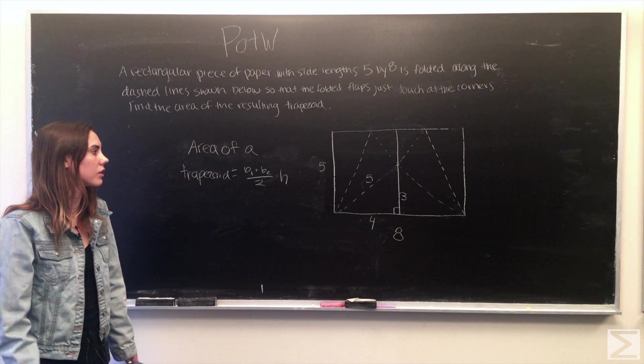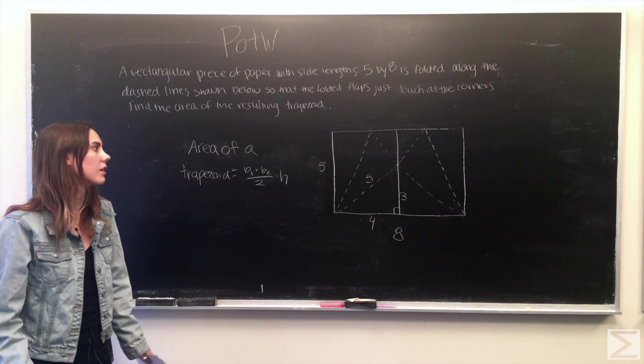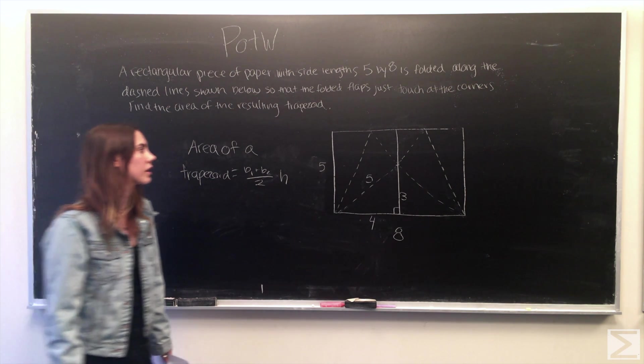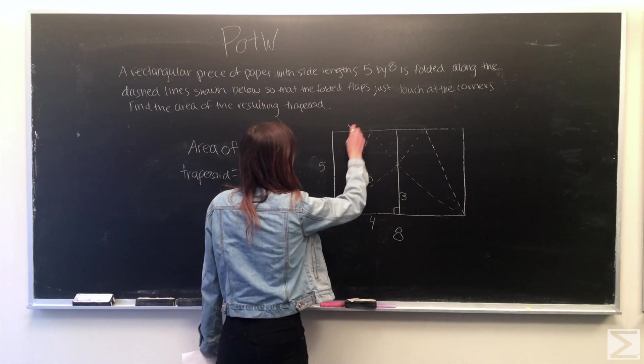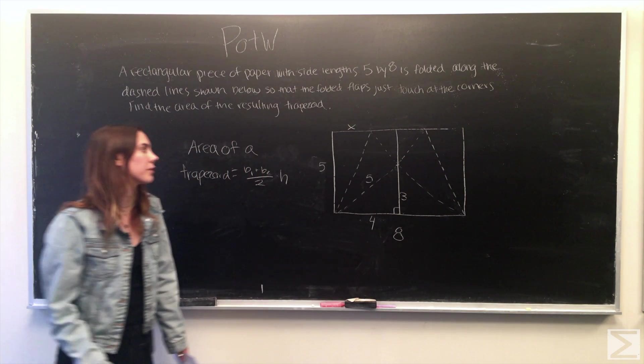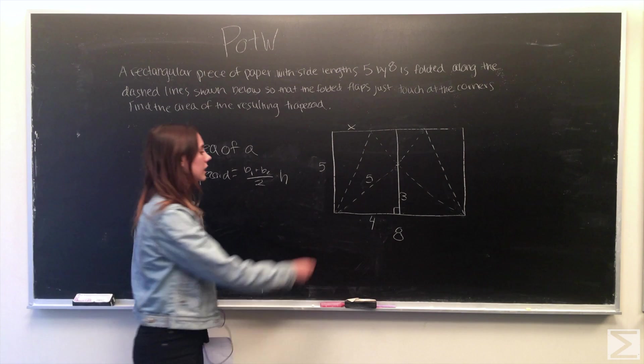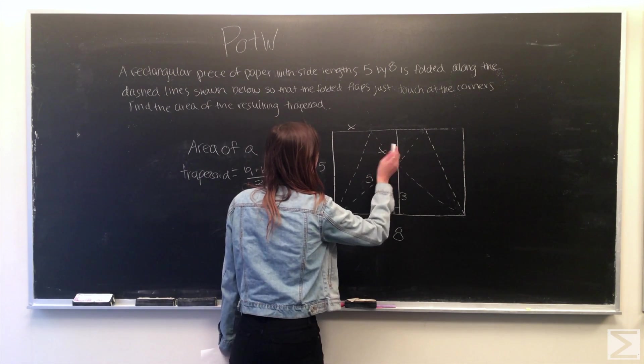What we can actually also see is from folding the corners of the paper over, if we call this part X, the reflection of X over the folded line is actually also here.